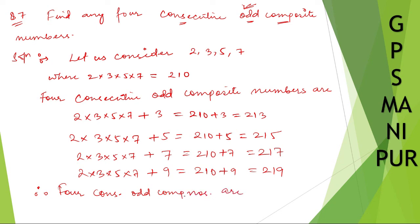I've already told you, do not write in shortcut — write the long form. So therefore, four consecutive odd composite numbers are: 213, 215, 217, and 219. Thank you so much, we will meet in the next video.